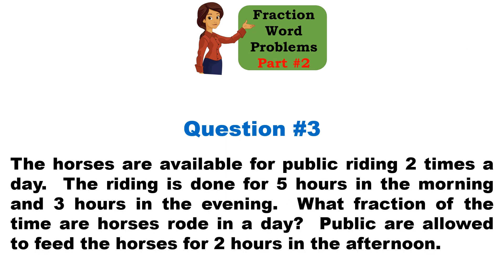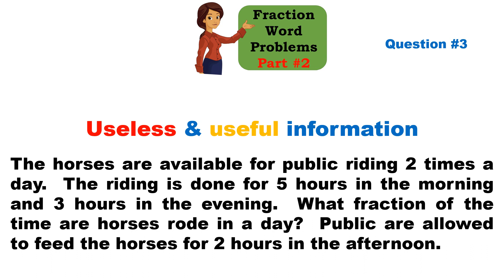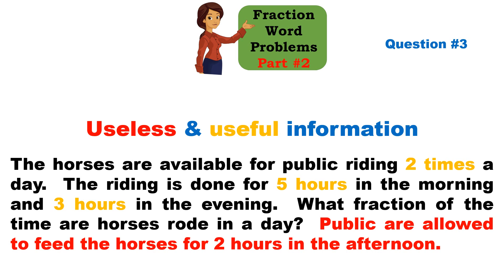Question number three: horses are available for public riding two times in the day — five hours in the morning and three hours in the evening. What fraction of the time in the day are the horses ridden? The public are allowed to feed the horses for two hours in the afternoon. That feeding statement is highlighted in red as useless information — it has no bearing on the riding times. The riding hours are highlighted in gold as useful information.